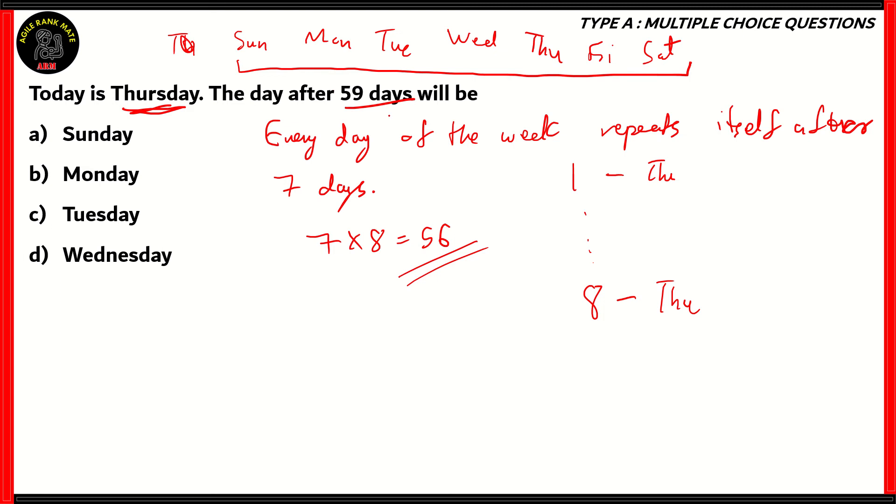So today is Thursday. If the first day is Thursday, then after eight weeks, the 57th day will also be a Thursday. Now from there, it's very easy. You just add up days to get the answer. So 57th day is Thursday, the 58th is Friday, the 59th is Saturday. And we need to find the day after 59 days, which is day number 60. That is Sunday. So therefore option A, Sunday is the right answer.